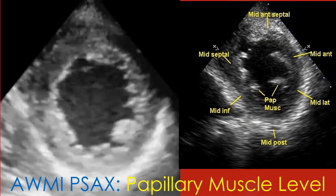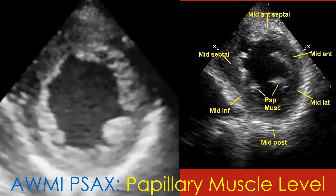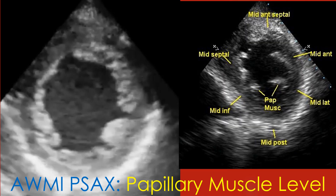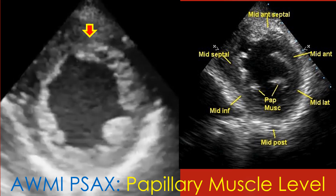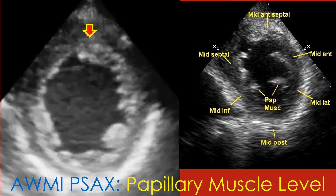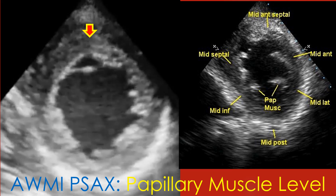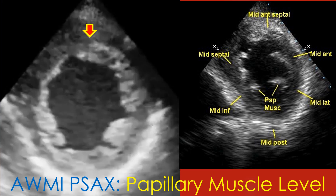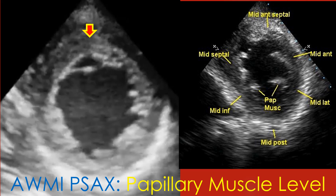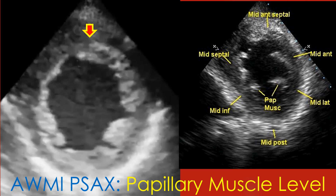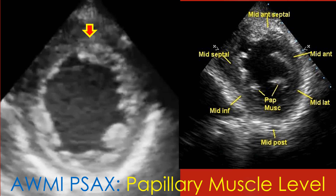Parasternal short axis view at the papillary muscle level showing mid anteroseptal hypokinesia. Other segments at this level are mid septal, mid anterior, mid lateral, mid posterior, and mid inferior.